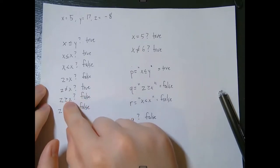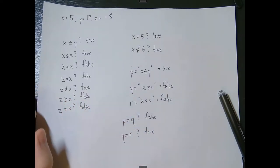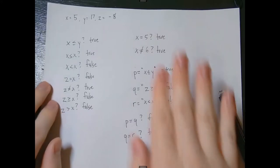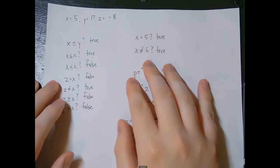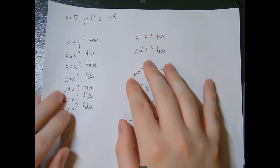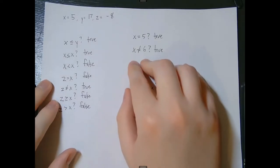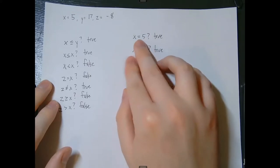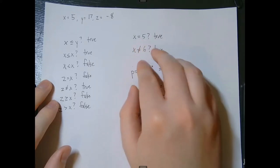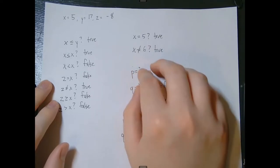We also have the greater than or equal to and the greater than statements. These are all true and false statements we can work with involving numbers. We can also do true or false statements that involve variables with actual constants, like x equals 5 — this is true — and x is not equal to 6, also true.